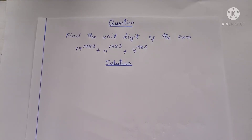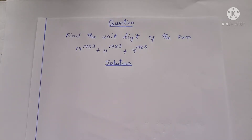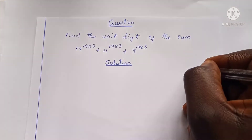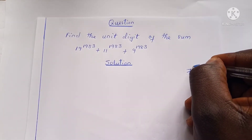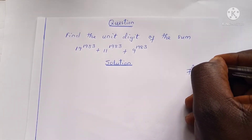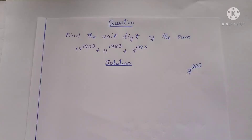In the last presentation, we saw that the unit digit of a number can be obtained by simply taking its remainder when divided by 10. For example, the unit digit of 7 raised to the power 222 is the remainder obtained when this number is divided by 10.